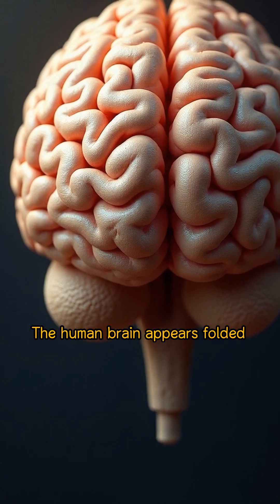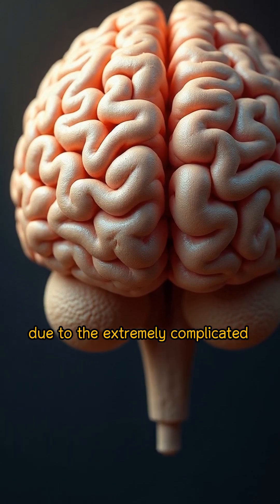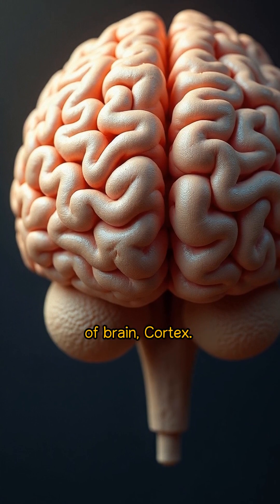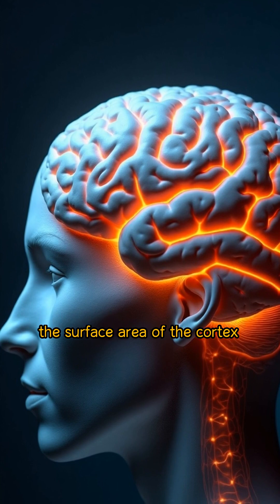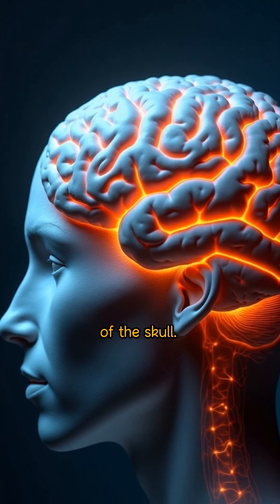The human brain appears folded due to the extremely complicated arrangement of the outer layer of brain, cortex. The main reason is to increase the surface area of the cortex within the confined space of the skull.